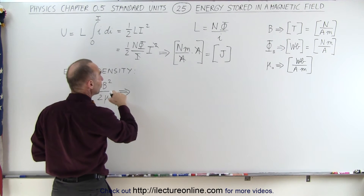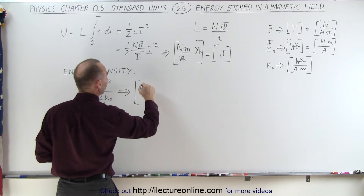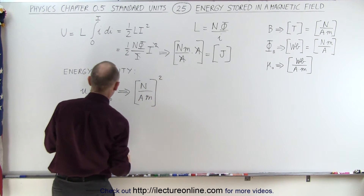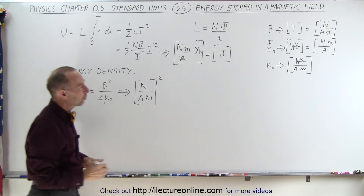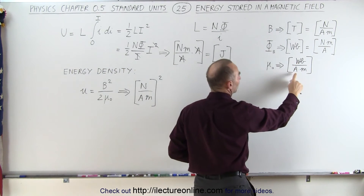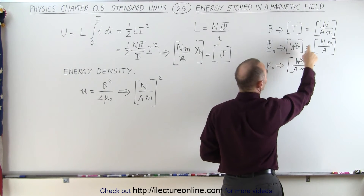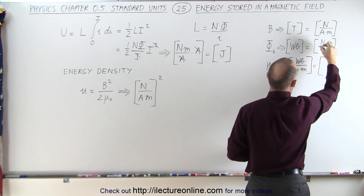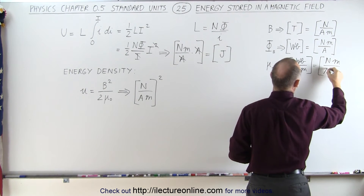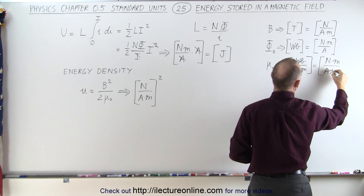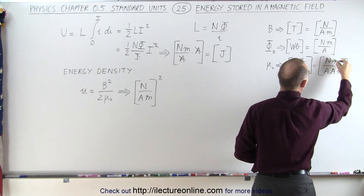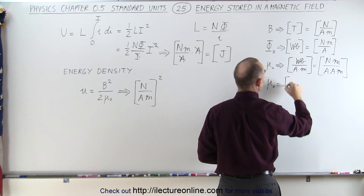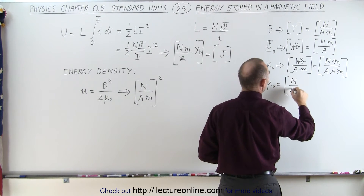If we plug in the units, we take Newtons per amp·meter and square that, then divide by mu-naught. The units for mu-naught are Webers per amp·meter. A Weber is defined as Newton·meters per amp, so substituting: Newton·meters per amp, divided by amp, divided by meter — the meters cancel — giving units for permeability of free space as Newtons per amp squared.